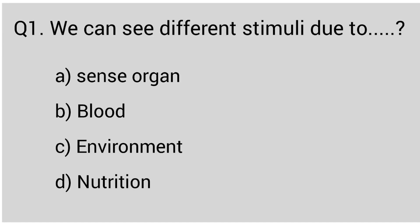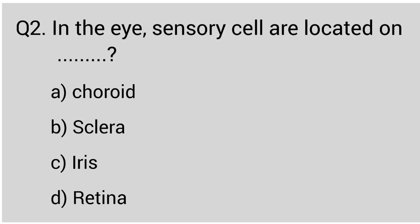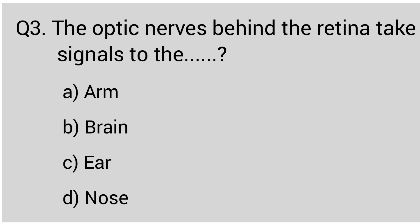Question number one: we can see different stimuli due to the sense organs. The correct answer is option A, sense organ. Question number two: in the eye, sensory cells are located on the retina. The correct answer is option D, retina. Question number three: the optic nerve behind the retina takes signals to the brain. The correct answer is option B, brain.